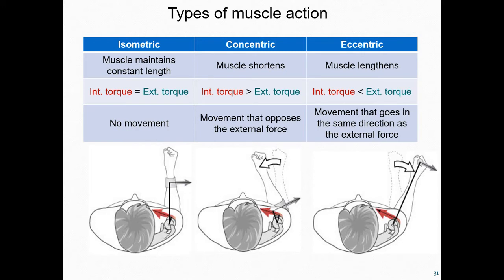Eccentric means away from the center. In an eccentric contraction, the muscle lengthens as the action unfolds. The torque created by the action of a muscle is less than the external torque — in this case, we see movement in the same direction as the external force. The most frequently encountered external forces are gravitational forces, meaning concentric contractions are frequently anti-gravity movements, where the movement of the body is in the direction opposite to gravity.